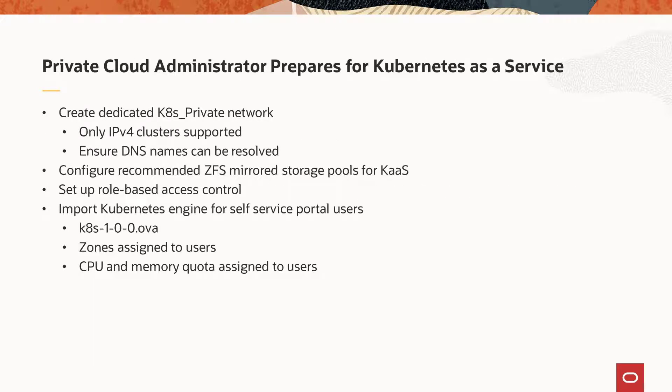To support Kubernetes as a Service, Private Cloud administrators must perform some essential network and storage configuration. Preparations include creation of a dedicated Private Network named K8S Private to support communication among cluster nodes. Only IPv4 clusters are supported in the Private Cloud environment. Additionally, administrators ensure that all DNS host names can be resolved. Oracle recommends using ZFS mirrored storage pools for robust, highly available storage in support of Kubernetes as a Service.